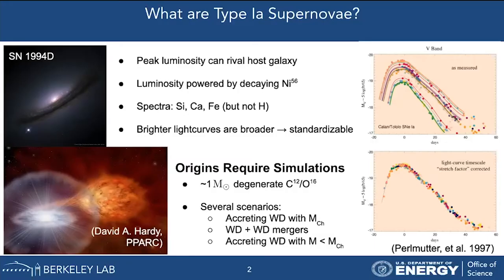The luminosity is powered by the decay of radioactive nickel-56 that is produced in nucleosynthesis. Their light curves have a standardizable property that allows you to measure the distance to the event. The big question is where do these come from, and what different physical processes can give you these events? They're very rare — about two per century per galaxy — so it's not like we can watch a star in our own galaxy give us a type 1a with any regularity.